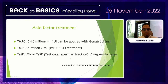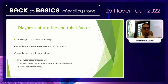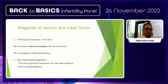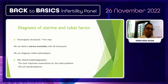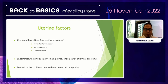In azoospermia cases, testicular sperm extraction (TESE) or micro-TESE can be performed. For diagnosis of uterine and tubal factors, transvaginal ultrasound is the first step and can clearly identify uterine pathologies and anomalies. 3D ultrasound can diagnose uterine anomalies and visible hydrosalpinx. HSG remains the most important examination for tubal problems and can detect occult hydrosalpinx as well.